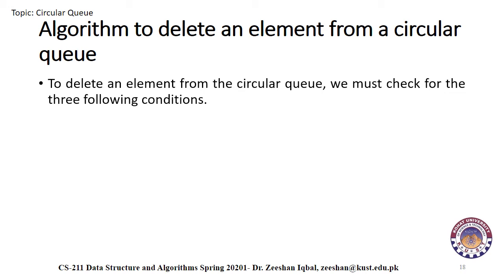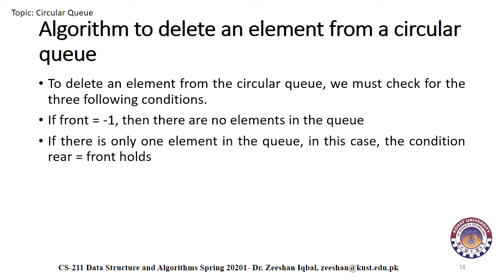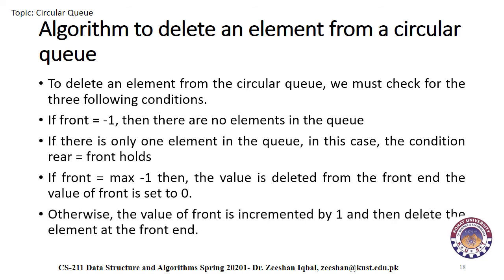In the algorithm to delete an element from a circular queue, we must check three conditions. Number one: if front equals minus one, there are no values in the queue — this is an underflow condition. Number two: if there is only one element, the condition rear equals front holds, and both are set to minus one, completely deleting the queue. Number three: if front equals max minus one, the value is deleted from the front end and front is set to zero. Otherwise, the front value is incremented by one and the element at the front end is deleted.